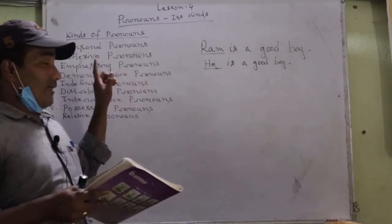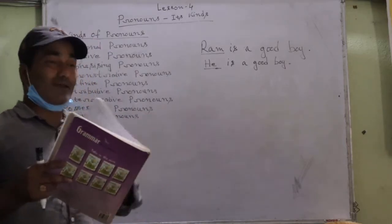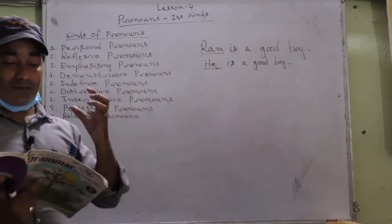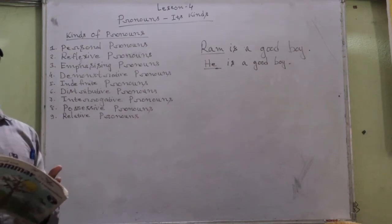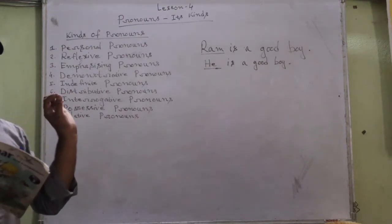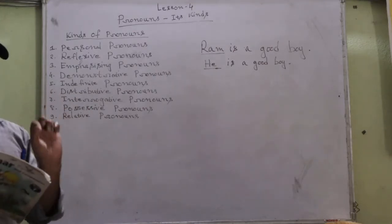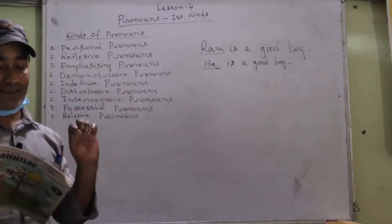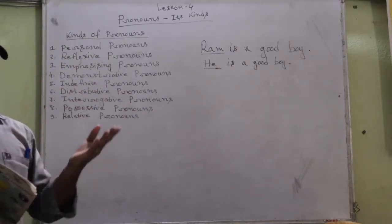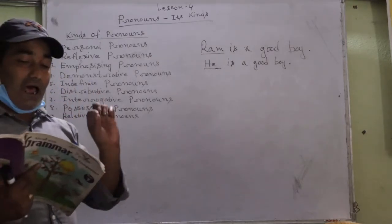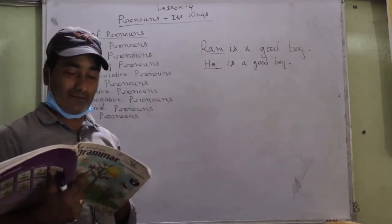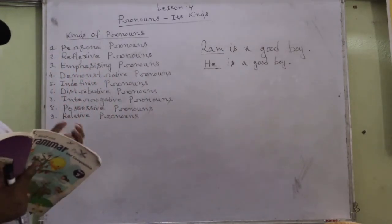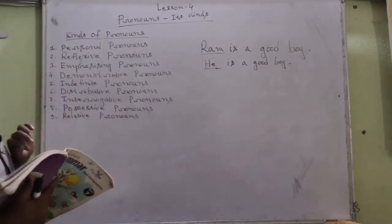Next comes the demonstrative pronoun. You know that demonstration means showing something. Demonstrative pronouns point out an object — they are used for pointing something out. For example, 'That is a nice house' — here 'that' is used to point out a particular house, so 'that' is called a demonstrative pronoun.